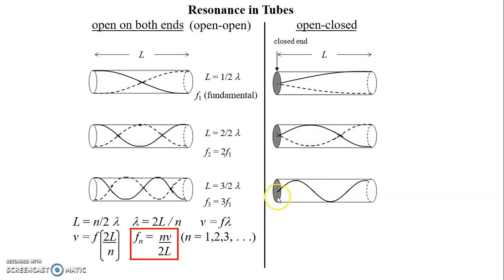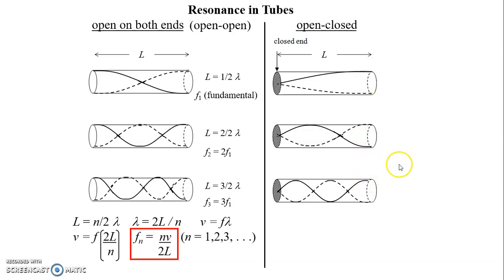The third tube should look like this: node here, antinode here. Notice the position of the antinode keeps switching — here it's at the top, here at the bottom, here at the top. Imagining it like a wave on a string, it would be oscillating back and forth.